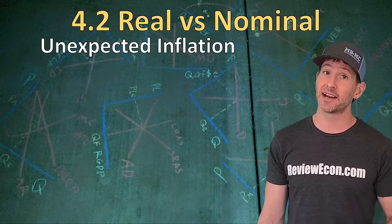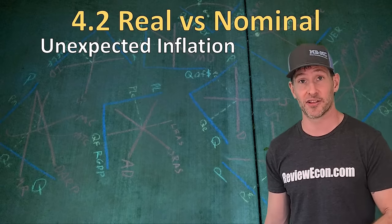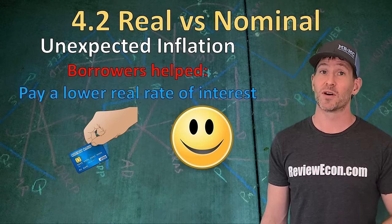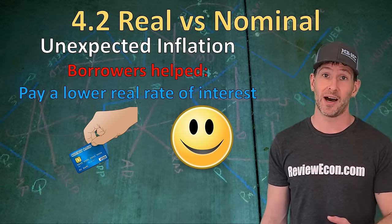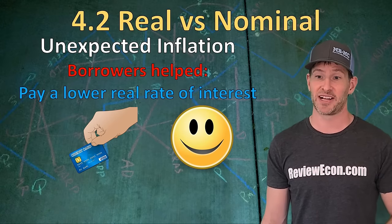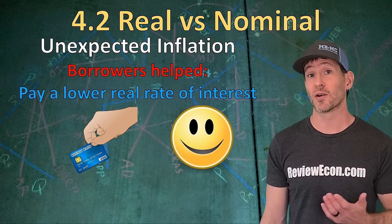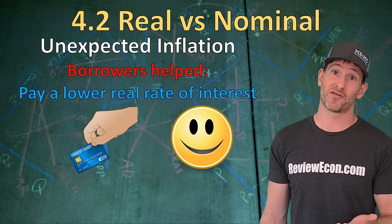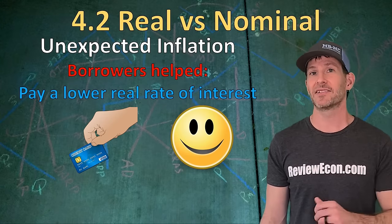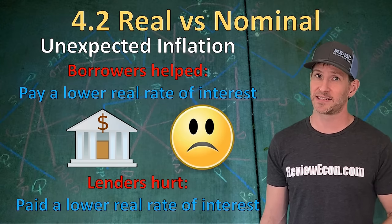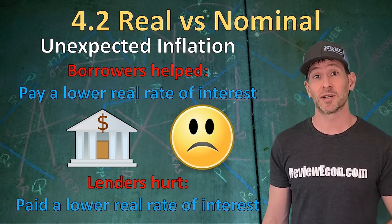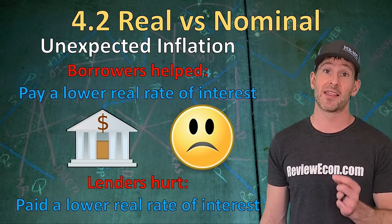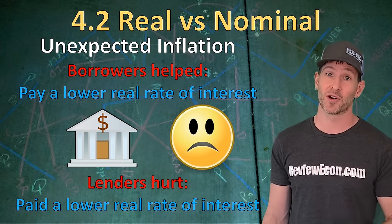Since the actual rate of inflation is sometimes different than the expected rate of inflation, unexpected inflation can help some people and hurt others. Borrowers are primarily the group helped by higher than expected rates of inflation, because they pay lower real interest rates and pay back their loans with less valuable money — fewer real dollars. Lenders, on the other hand, are hurt by higher than expected rates of inflation, because the real interest rate they earn decreases and they are also paid back fewer real dollars.